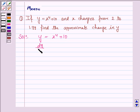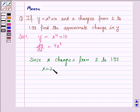dy/dx is equal to 4 into x to the power 3. Now since x changes from 2 to 1.99, we have x is equal to 2 and x plus delta x is equal to 1.99.